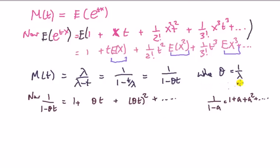We don't have to say absolute value because θ is a rate parameter, so it's non-negative. And t can be negative, but when dealing with MGFs, we're only interested in this being differentiable around t=0, so we're only interested in minute values of t. This is going to hold.